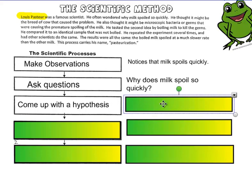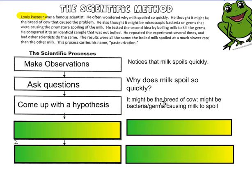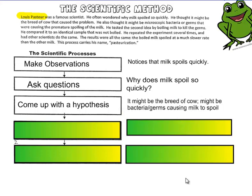And we're back. But, something like this. He said it might be the breed of the cow. And he said it might be the bacteria or the germs causing the milk to spoil. These are two separate hypotheses, which require two different tests. From this information here, we can see that he goes on to look at this second one. It might be germs causing the milk to spoil.